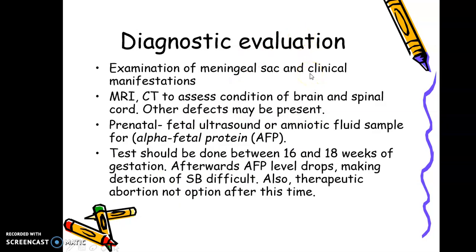Diagnostic evaluation includes clinical examination, X-ray, MRI, and CT scan to assess the condition of the brain and spinal cord. X-ray can show abnormal loss of bony closure posteriorly, while MRI and CT scan assess the brain and spinal cord in detail. Other defects may also be present.